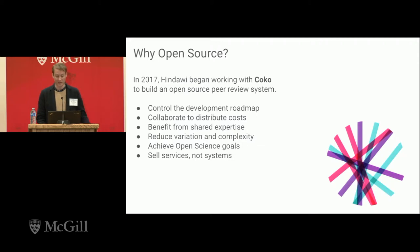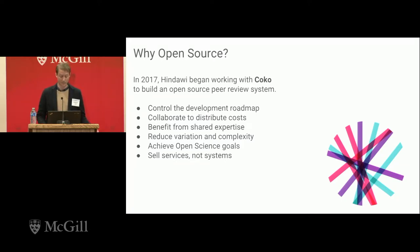We also wanted the traditional benefits of open source: collaborating to share costs, benefiting from shared expertise, and removing unnecessary variation and complexity from the system. Too many journals think they need a bespoke workflow, but by removing that variation we make things easier for authors, editors, and reduce costs for publishers. We want to achieve open science goals. And for Hindawi, we don't want to get into the software business, but we do sell services on top of software. The more we create a shared user base of interoperable software, the easier it is for us as a commercial company to sell services — there's a direct business benefit.